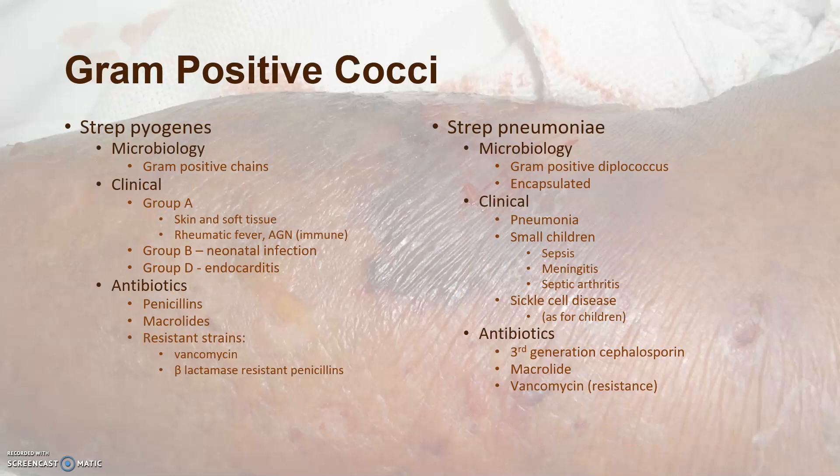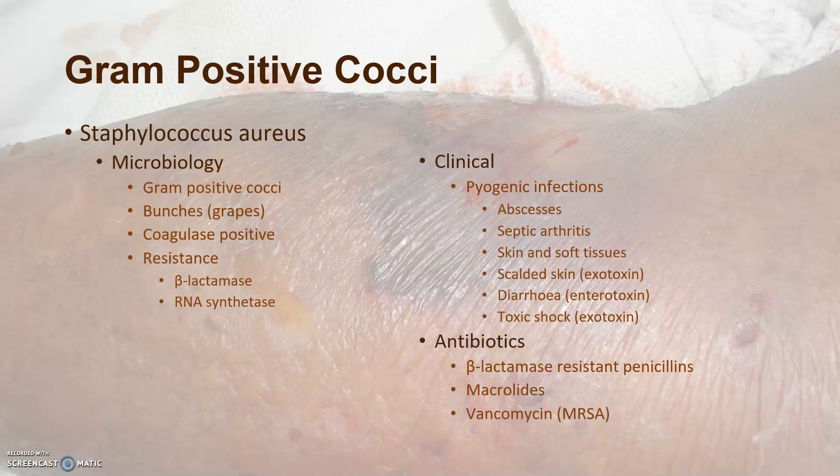You need to know about the microbiology of gram-positive cocci, such as Strep pyogenes and Strep pneumoniae. You may wish to pause the video and read this slide, but this is just an introduction — you need to know quite a lot more about these organisms. You also need to know about Staph aureus.